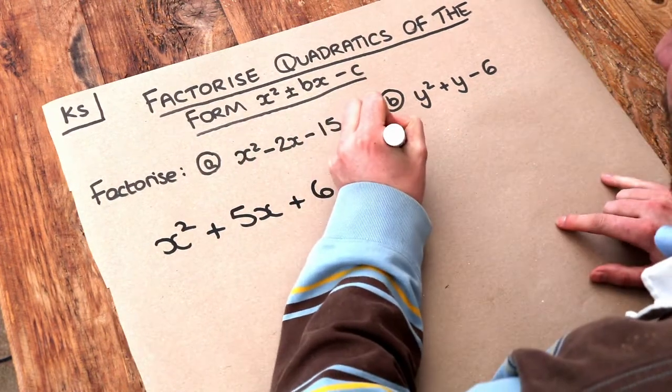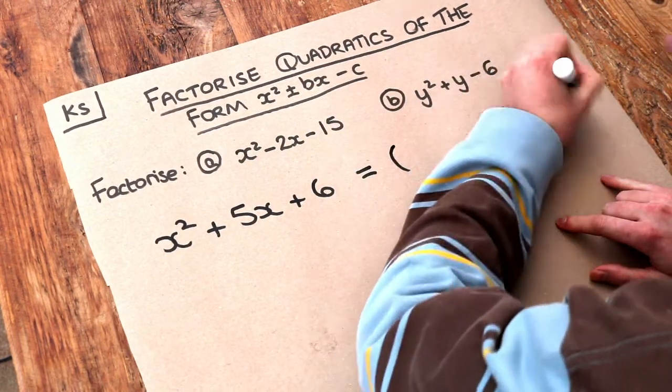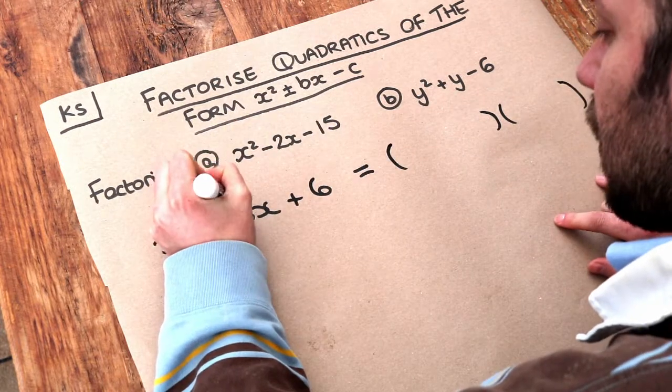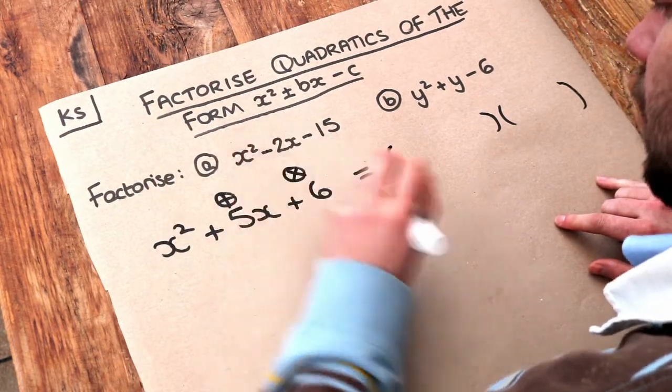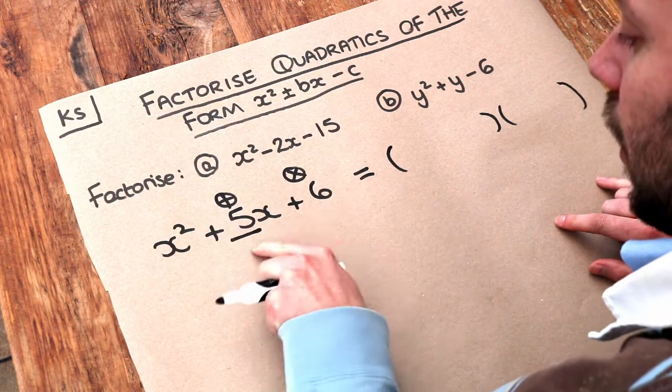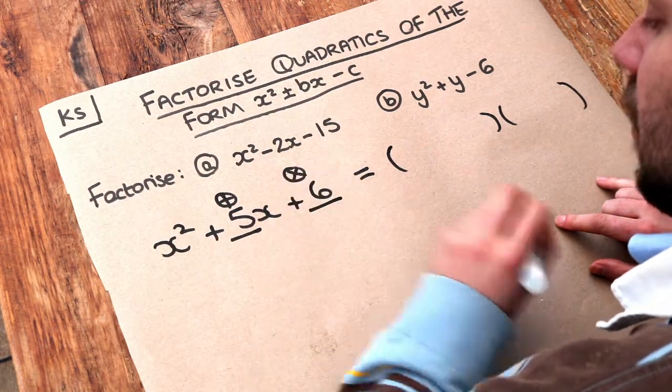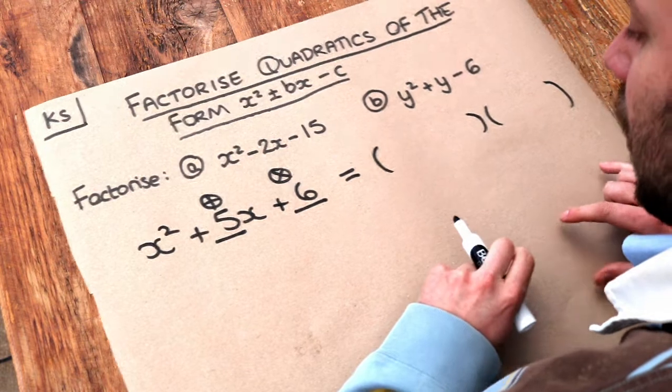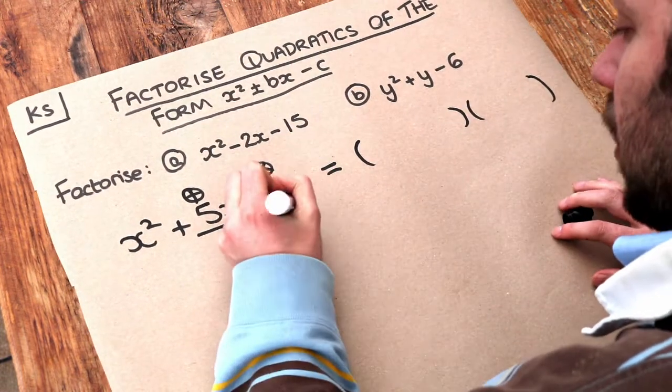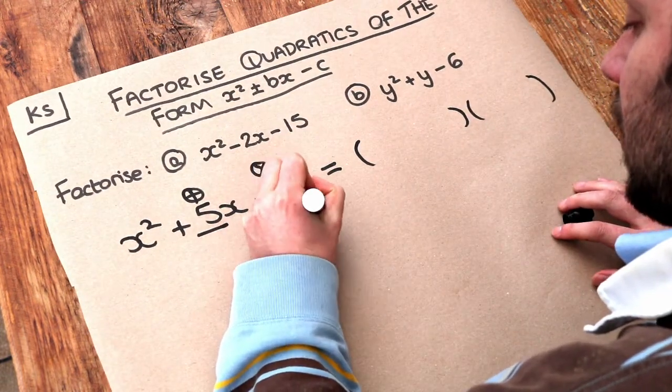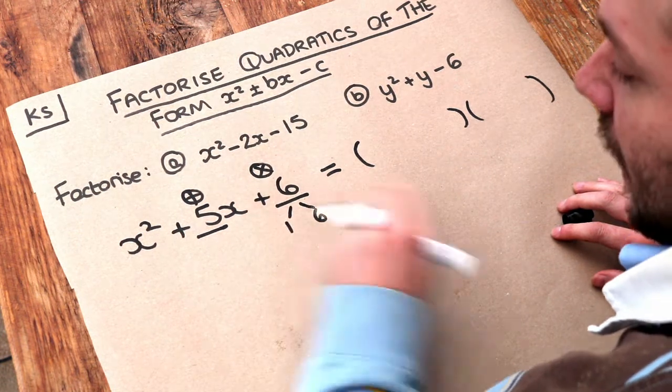To factorise it, to get it into two brackets, we find two numbers which add to give this middle number and times to give this last number. So they've got to add to give the 5, the number in front of the x, and they've got to times to give this last number, the 6. So what numbers multiply to give 6? Well it could be 1 times 6, but those numbers don't add up to give 5.